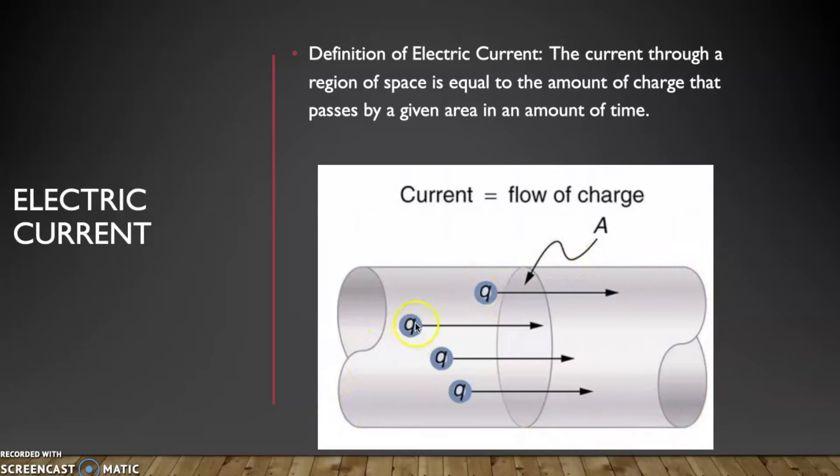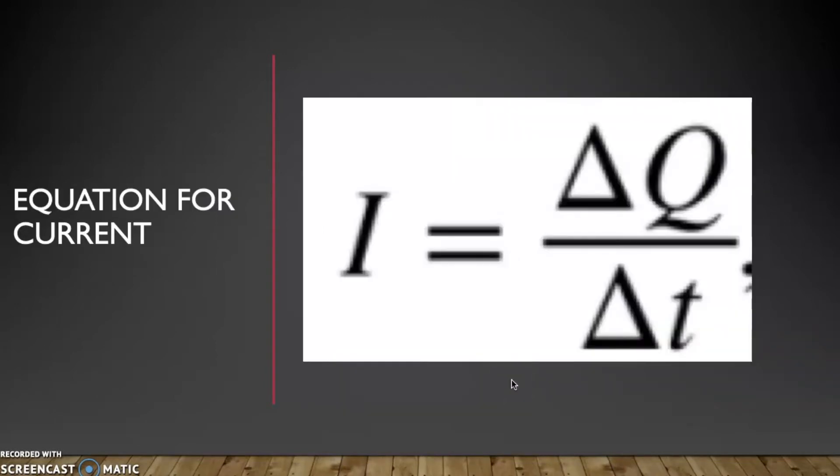This right here, we have our wire and then we have our charges Q. Now current can be defined as the amount of Q or charge that passed by this area in a certain amount of time. So if we have more Q passed by, we have a higher current.